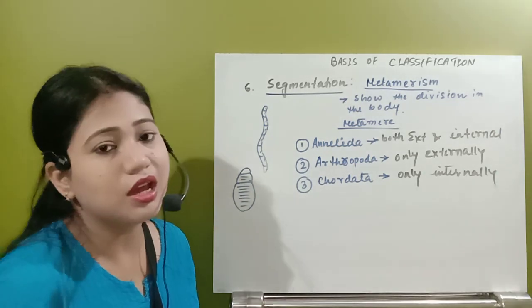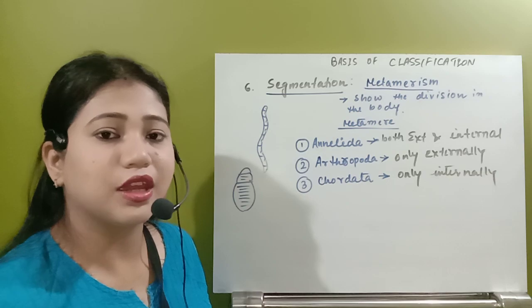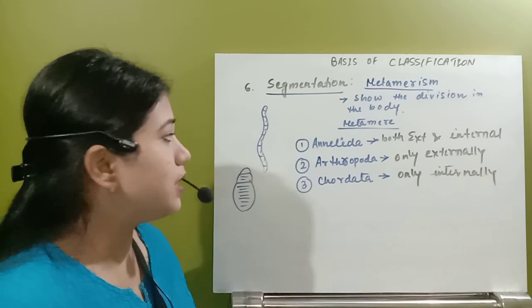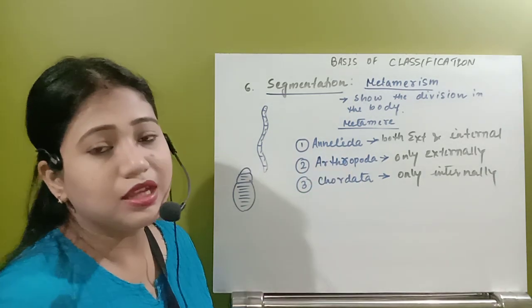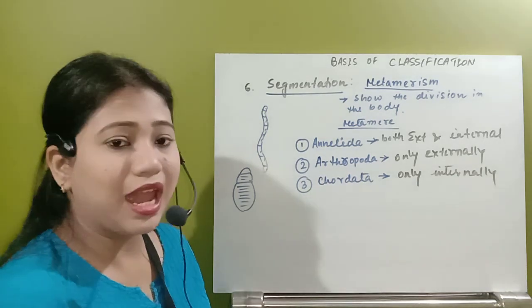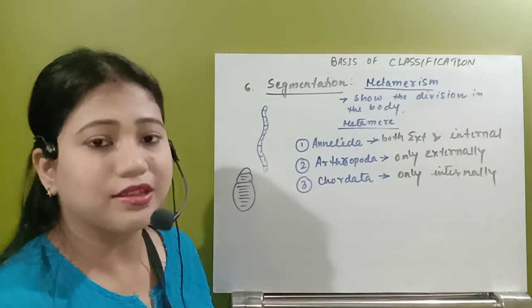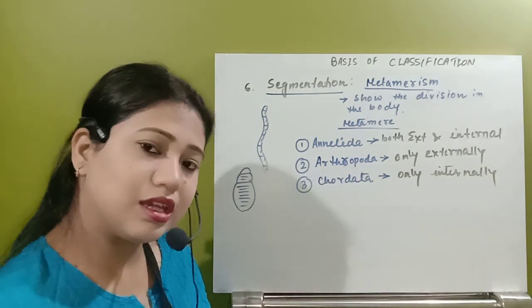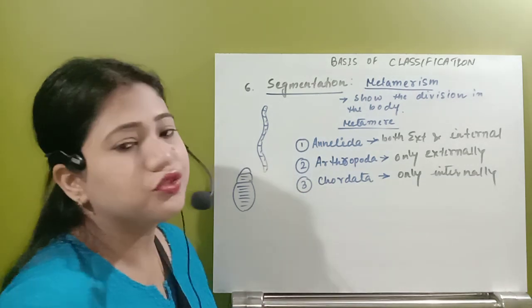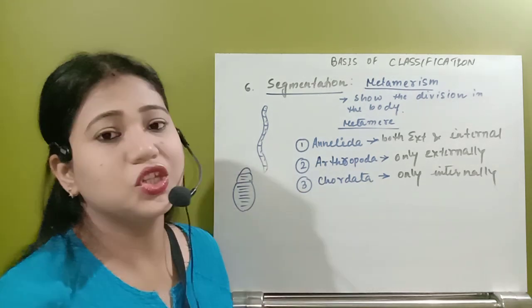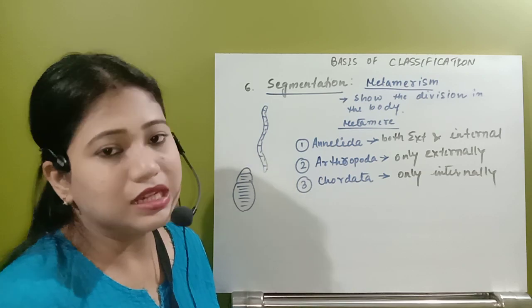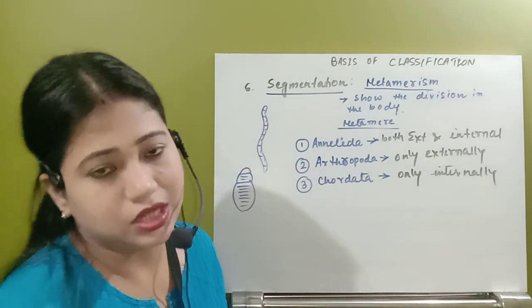Segmentation is another basis of classification. There are three groups: annelida, arthropoda, and chordata. Annelids show both external and internal segmentation. Arthropods have only external segmentation, and chordates have only internal segmentation.